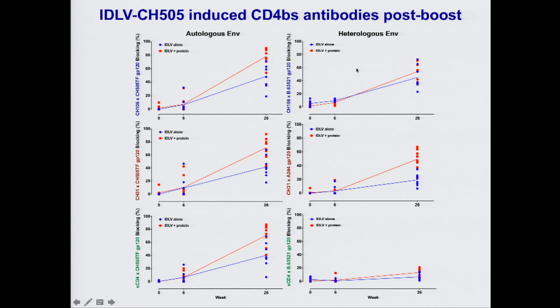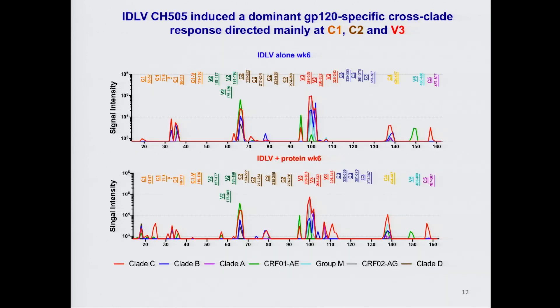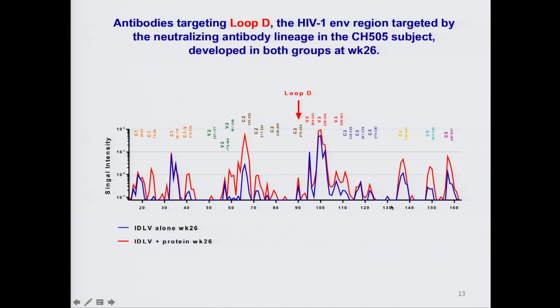We detected blocking activity both against the autologous and the heterologous viruses for the two bNAbs tested. We next performed linear epitope mapping to determine the epitope specificity of the induced antibodies, and found that a dominant and sustained GP120-specific cross-clade response directed mainly at C1, C2, and V3 developed in both groups at six weeks post-prime. After the second immunization, additional specificities emerged including V2 and loop D, which is the region of the HIV envelope targeted by the neutralizing antibody lineage in the CH505 subject.